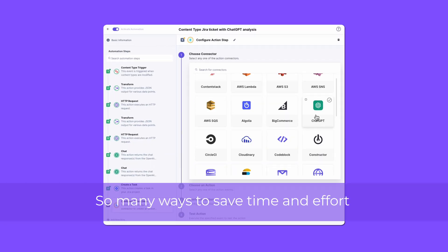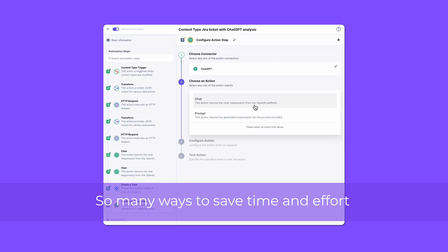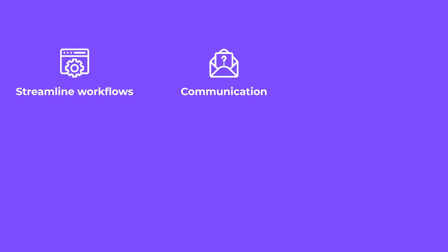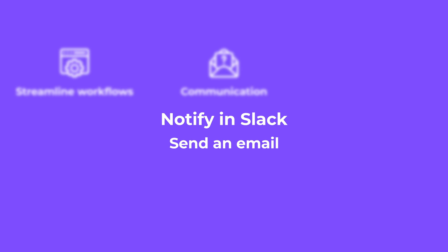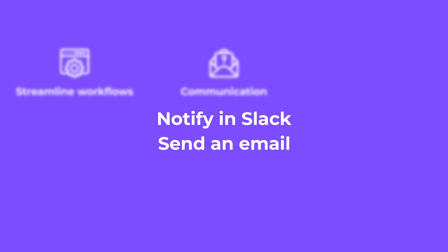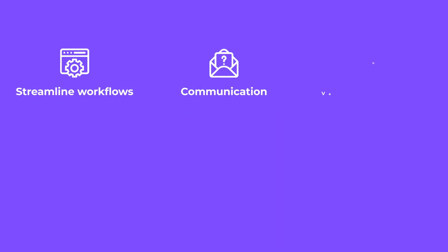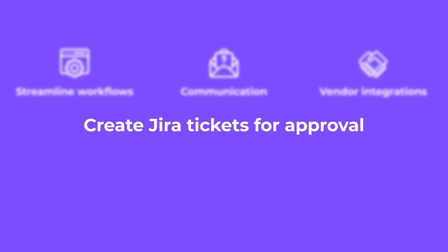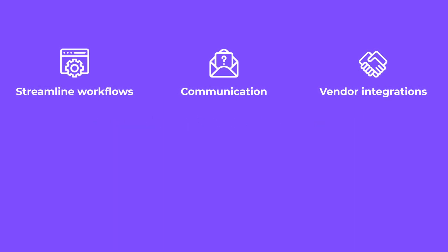Content and digital experience teams use Automation Hub in a wide variety of ways: reducing repetitive tasks like writing story summaries or tagging for SEO, helping with internal communications by notifying a Slack channel or sending an email when something's published, and syncing with external systems like JIRA to automatically create a new ticket when an approval is needed and keeping the tickets in sync.